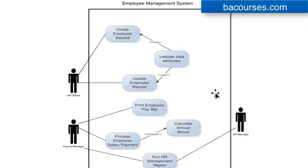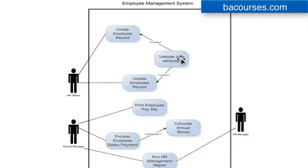Then we've got these other two use cases in our example that don't actually have any lines going to any actors. This simply means that these pieces of functionality will be done by the system in the back end — they are not pieces of functionality that will be directly interacted with by an end user or actor within the system.